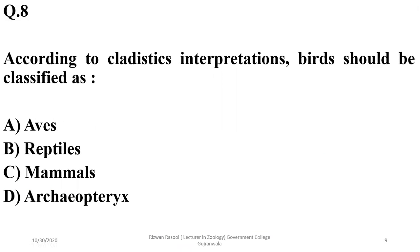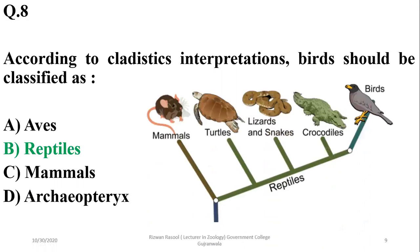Question eight: according to cladistic interpretations, birds should be classified with reptiles as a subgroup. As shown, turtles, lizards and snakes, crocodiles, and then birds form a clade. The correct option is beta.